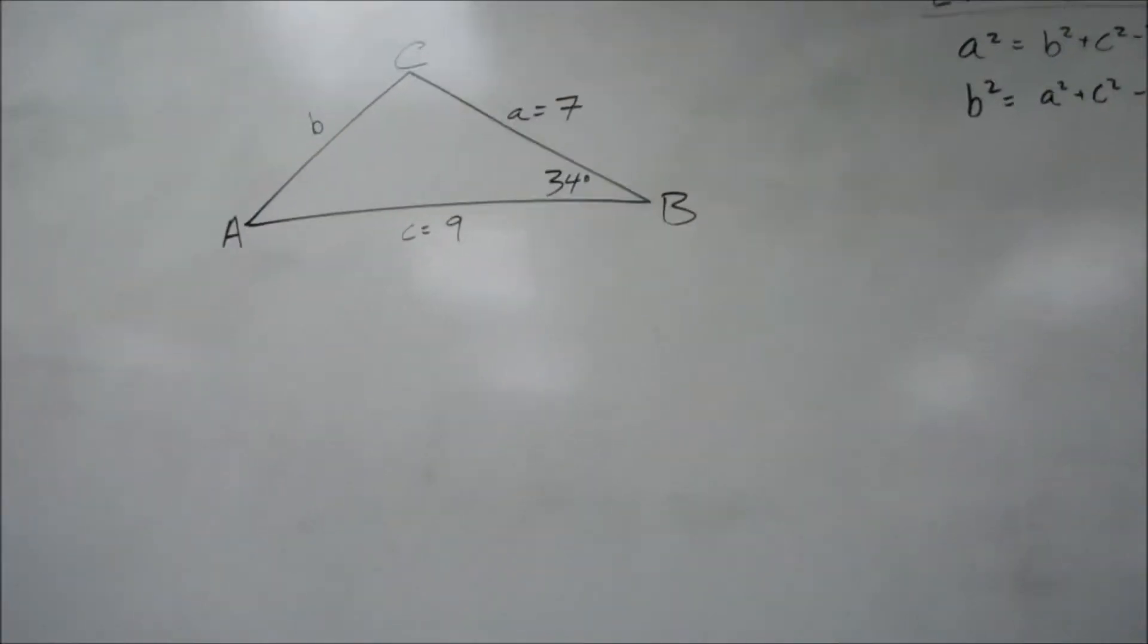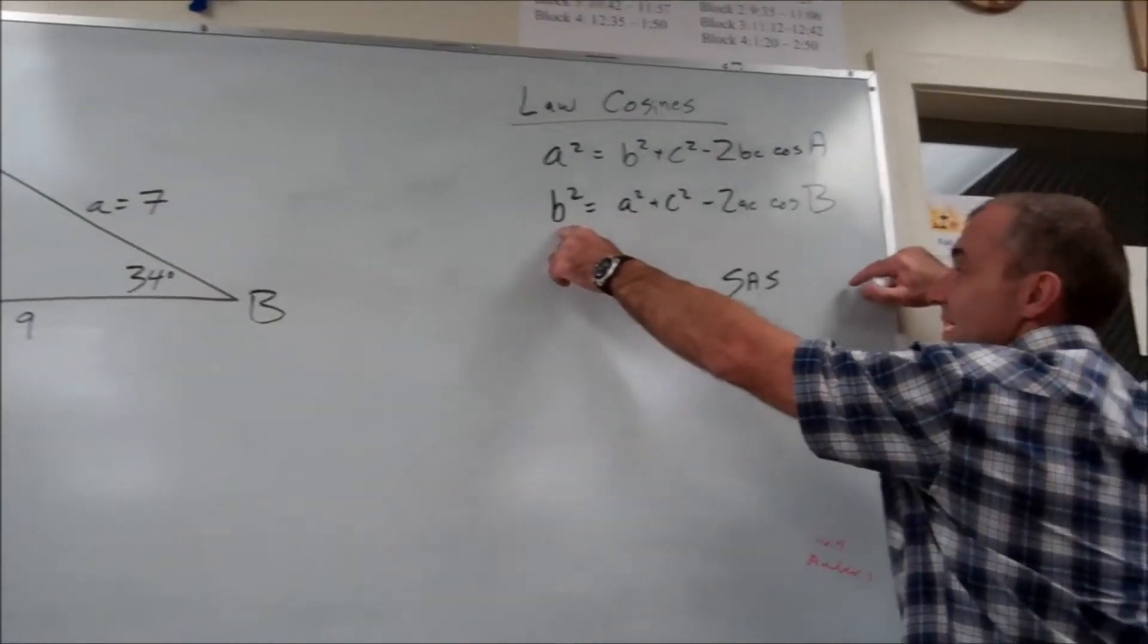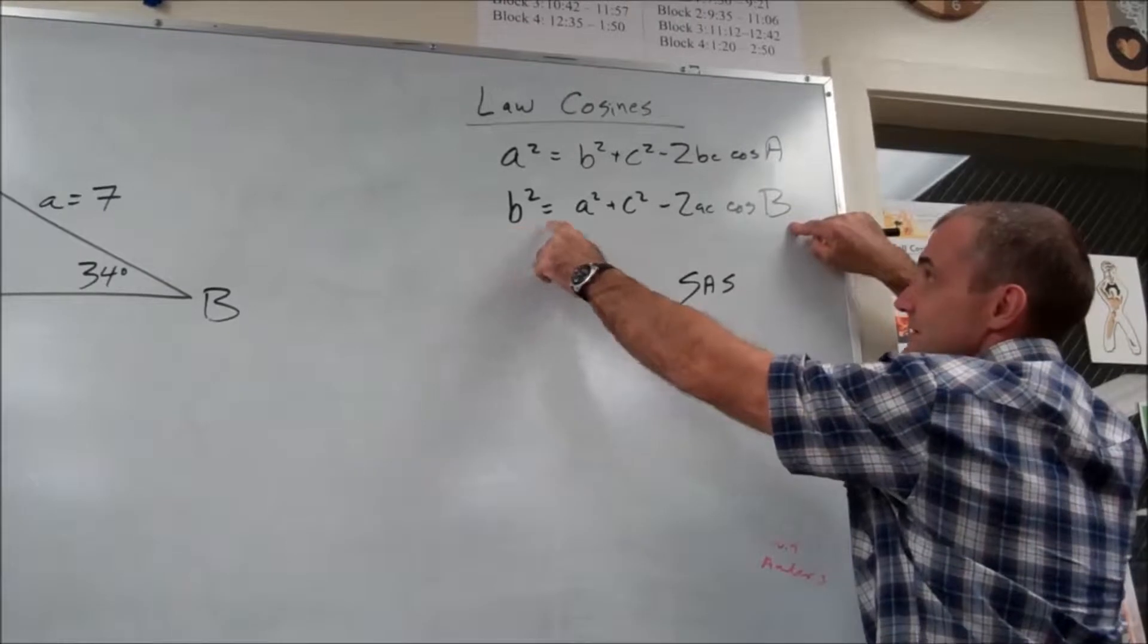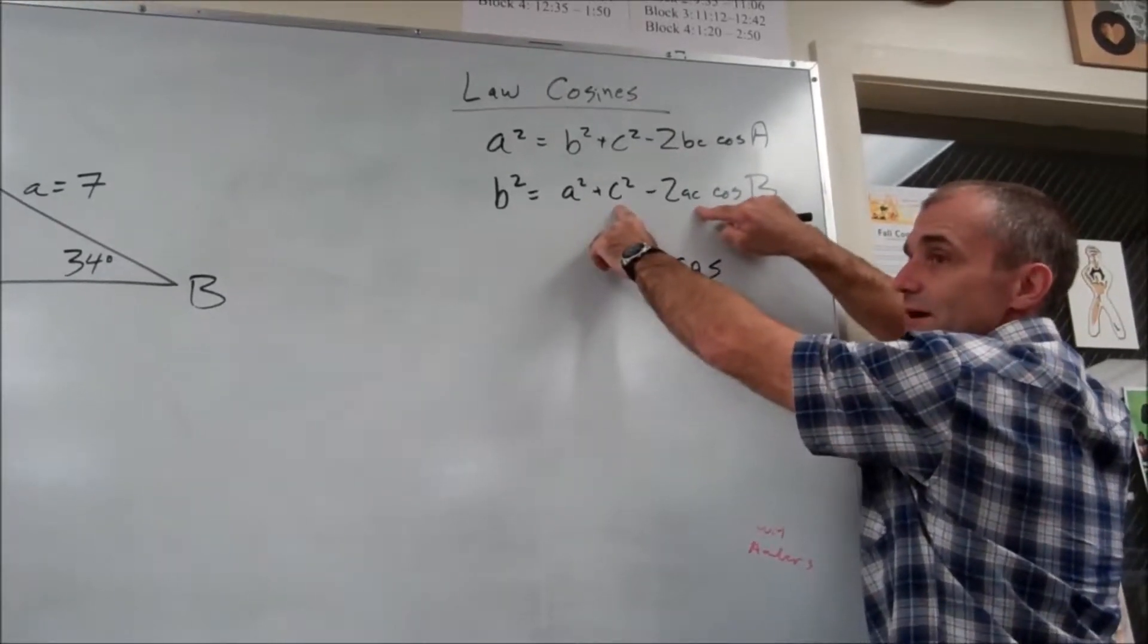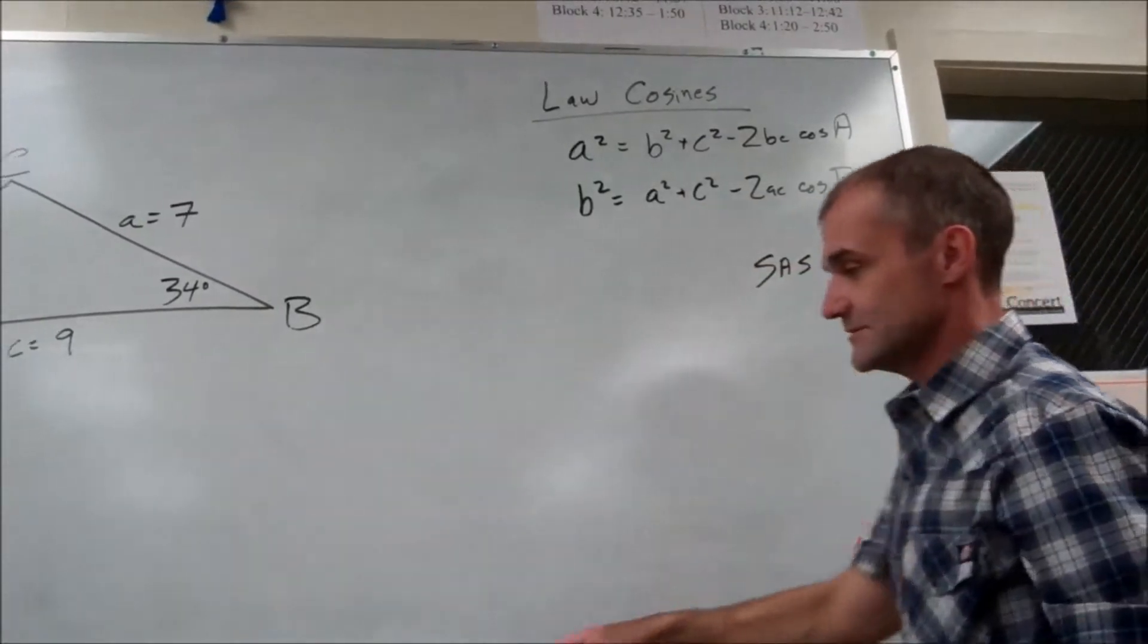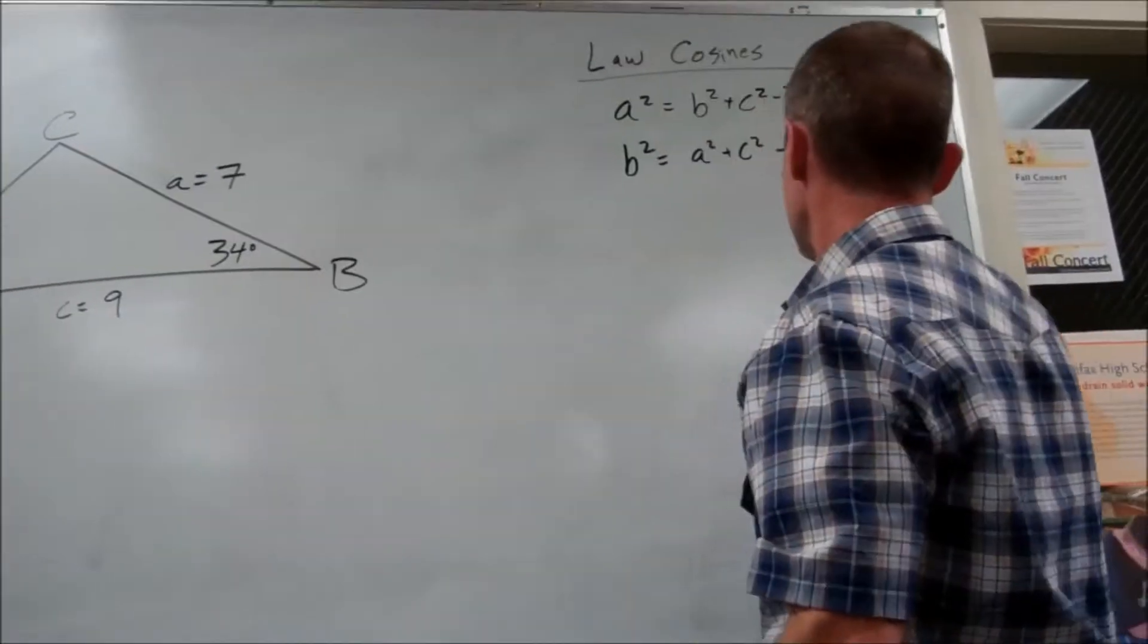B squared equals A squared plus C squared minus 2AC cosine of B. And it's pretty easy to figure it out because whatever side this is, this is the angle opposite it. These two sides always correspond to these two sides.